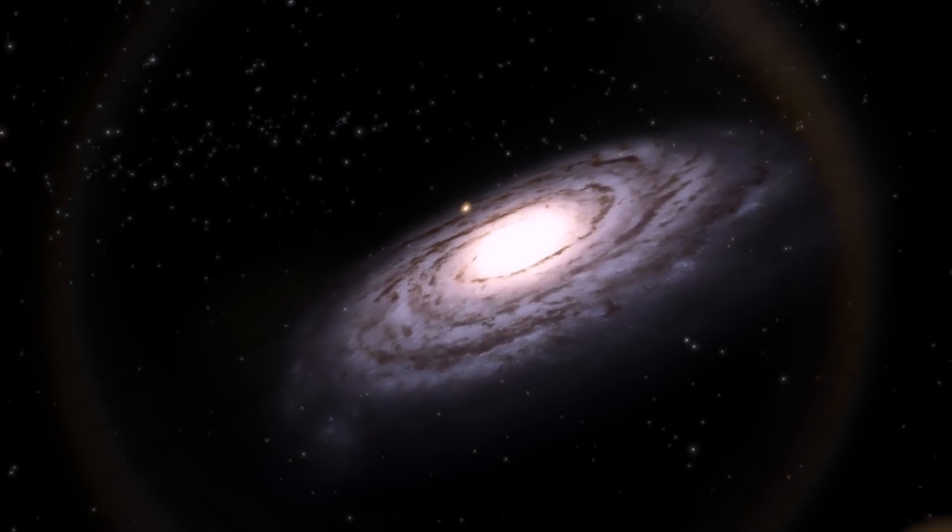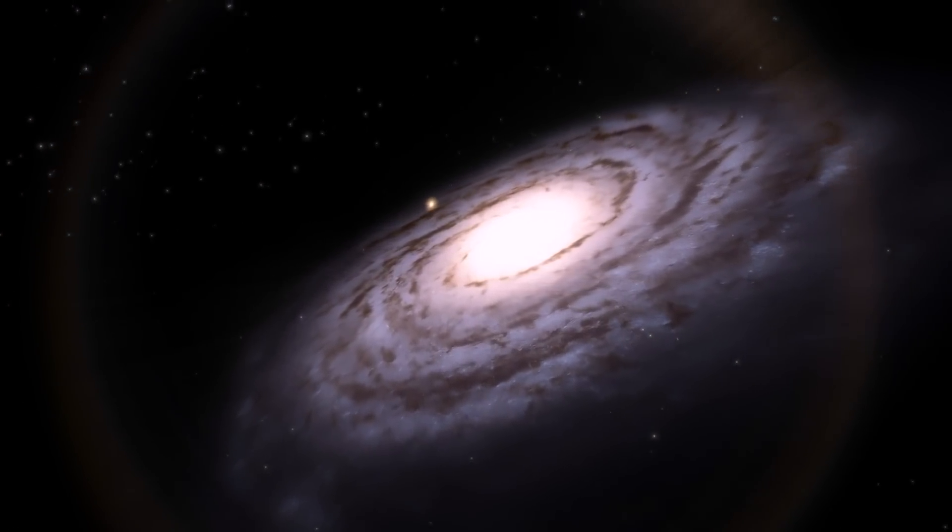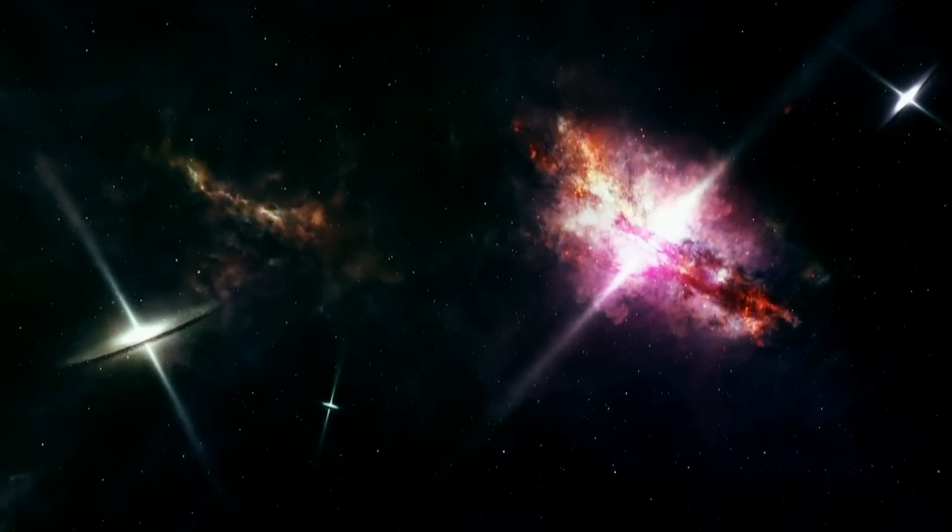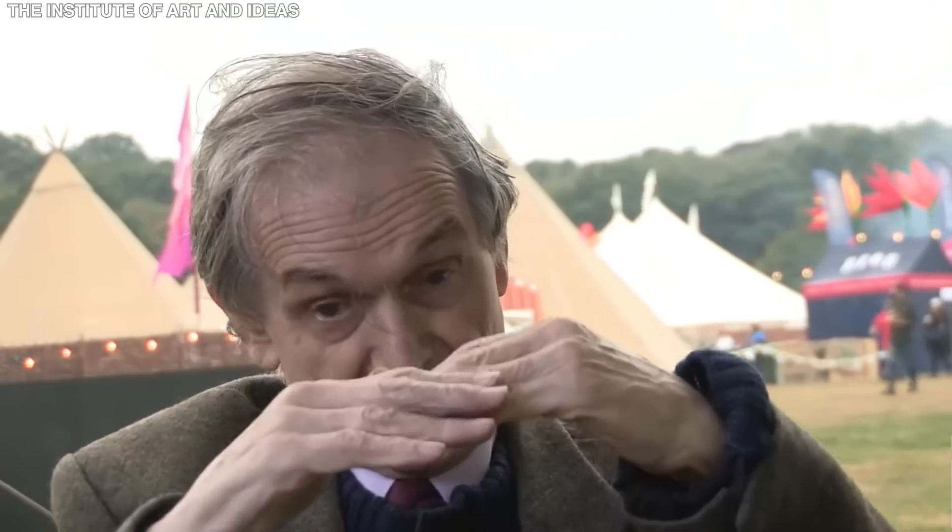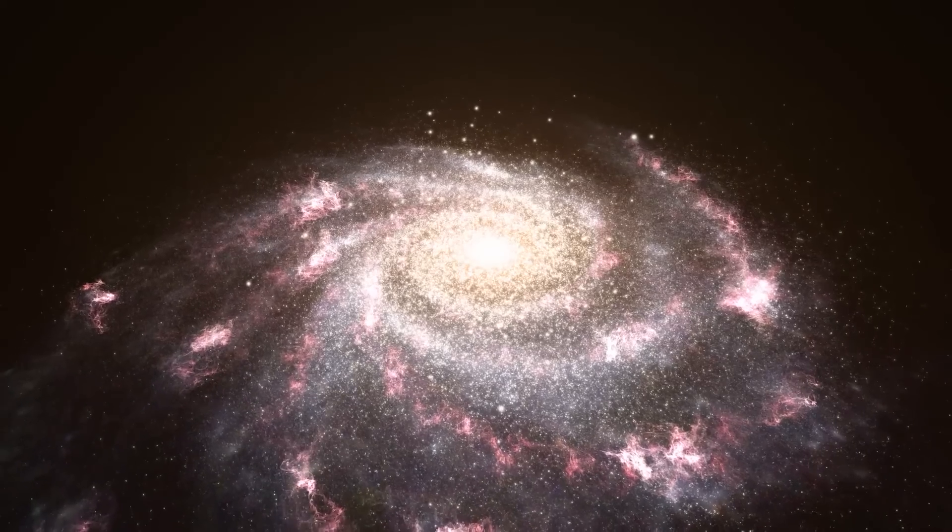The halo of the Andromeda Galaxy was measured by looking at how much light it absorbed from background quasars. Scientists were shocked to discover that the halo of the Andromeda Galaxy extends far beyond its observable boundaries.